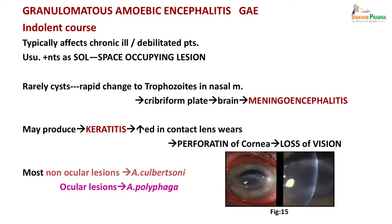Granulomatous amoebic encephalitis typically has an indolent course. It typically affects chronically ill or debilitated patients and may present as a space-occupying lesion. Rarely, cysts rapidly convert to trophozoites in the nasal mucous membrane and travel through the cribriform plate to cause meningoencephalitis, but mostly it presents as a solitary space-occupying lesion. Acanthamoeba can also produce keratitis, especially in people who wear contact lenses and have not used proper sterile water or cleaned the lenses properly - perforation of the cornea can lead to loss of vision.